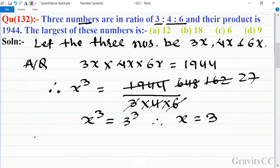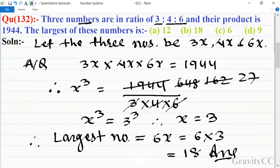So the largest one is, therefore, largest number equal to 6x. So 6 into 3 is 18, which is the required answer. So option B is the correct answer.